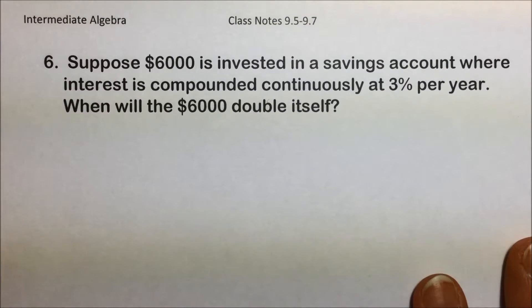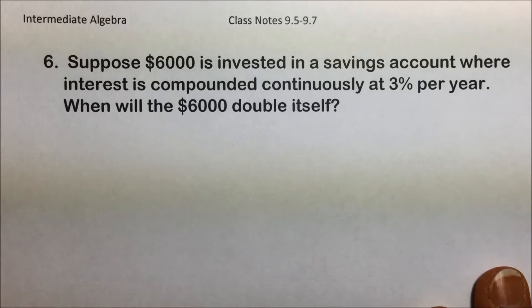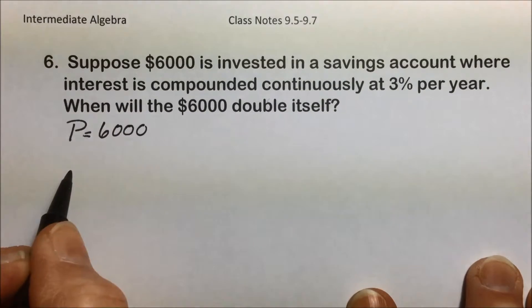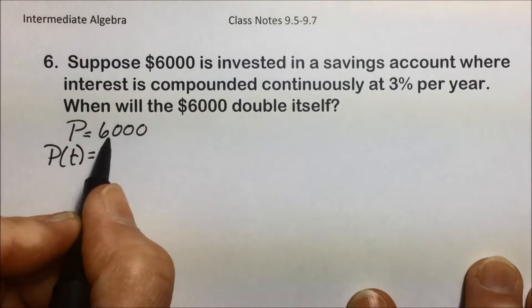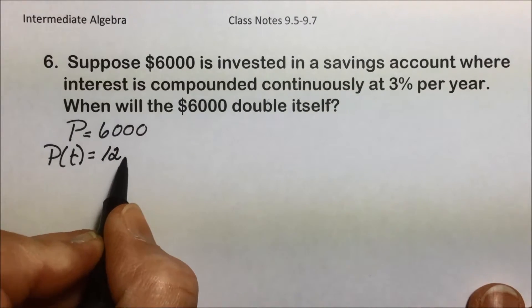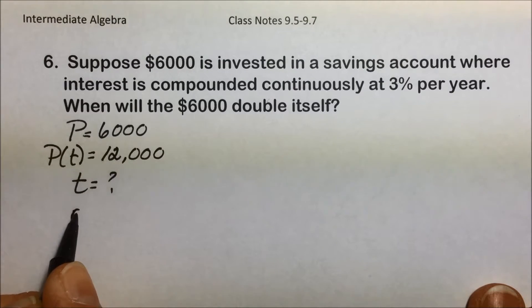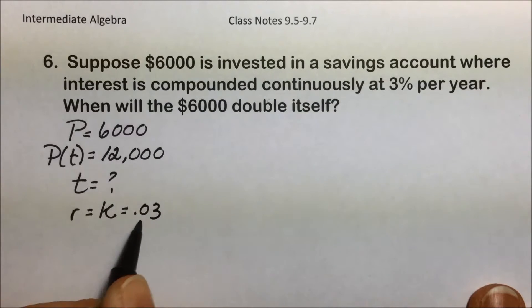This problem states, suppose $6,000 is invested in a savings account where interest is compounded continuously at 3% per year, when will the $6,000 double itself? So we're starting out with an initial $6,000. They're asking us, when will that amount double? In other words, when will $6,000 turn into $12,000? And the question is, when? The other piece of information they're giving us is that rate or exponential growth of 3% per year.